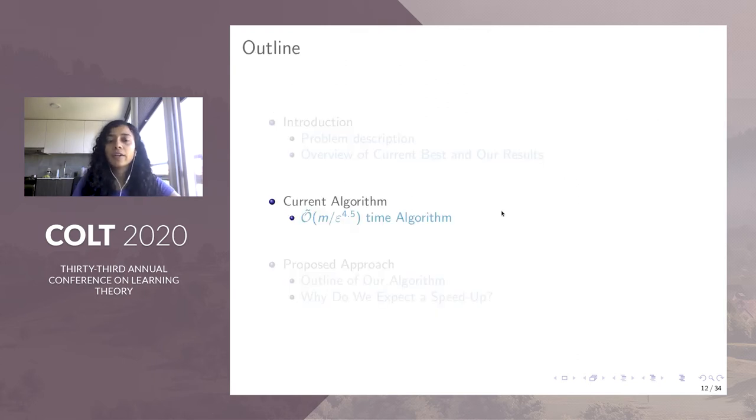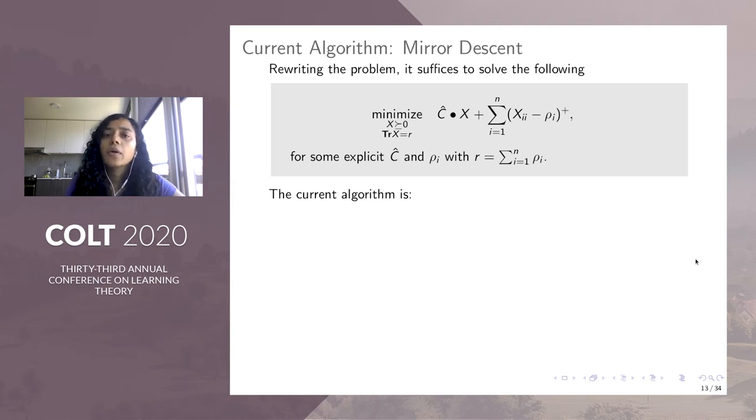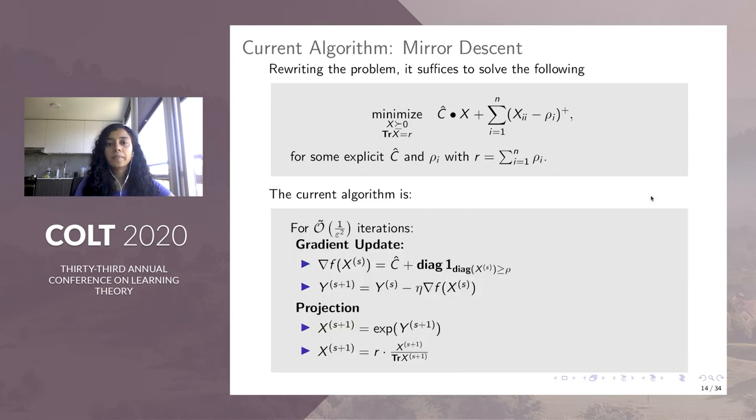We now get an overview of the current best algorithm by Arora and Kali because we build upon their algorithm. By using the Lagrange multipliers, we can rewrite the problem as follows. Note that the diagonal constraints have been now promoted to the objective, as here. And in the constraint set, we now have this trace constraint. The algorithm by Arora and Kali uses these two steps. The first step is gradient update, and because the function objective is quite simple, this is the gradient. And the second is the projection step, which requires a matrix exponential, matrix exponentiation and normalization to satisfy this trace constraint.